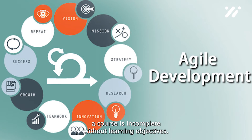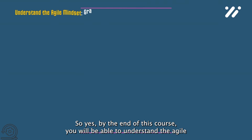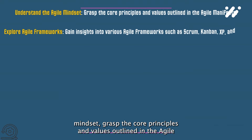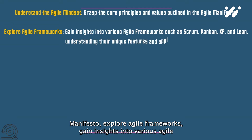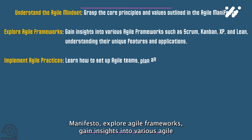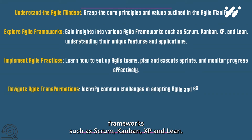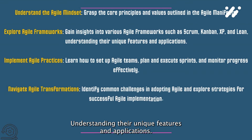A course is incomplete without learning objectives. By the end of this course, you will be able to understand the Agile mindset, grasp the core principles and values outlined in the Agile Manifesto, and explore Agile frameworks — gaining insights into various Agile frameworks such as Scrum, Kanban, XP, and Lean, understanding their unique features and applications.